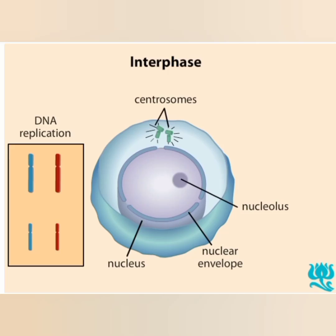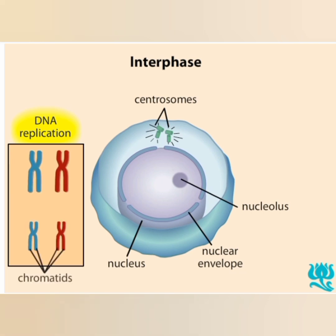Before meiosis begins, in the preceding interphase, DNA replication takes place. At this point, the chromosomes are not condensed and are not visible under a light microscope. However, we depict them in a condensed manner so that you can see that the cell replicates each chromosome to form two chromatids.